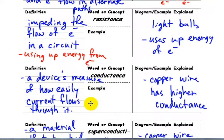Conductance. A device's measure of how easily current flows through it. So for example, copper wire has a high conductance. It allows electrons to flow freely through it.